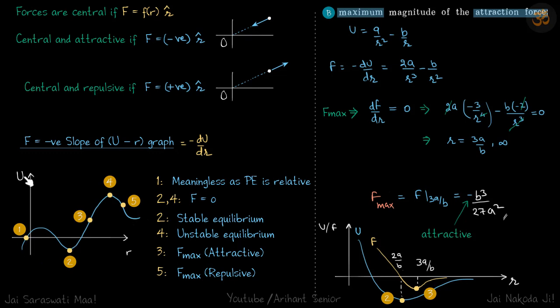The first point where U is zero is meaningless as potential energy is relative. At the second and fourth points, you can see dU by dR is zero, which means force is zero because force is minus dU by dR.